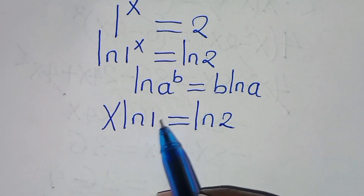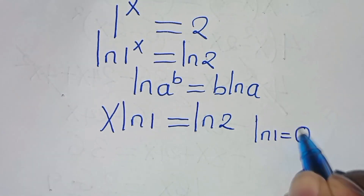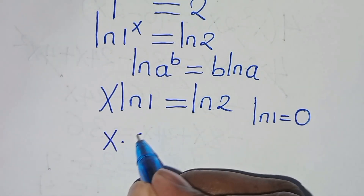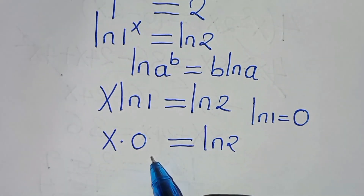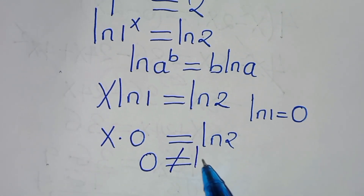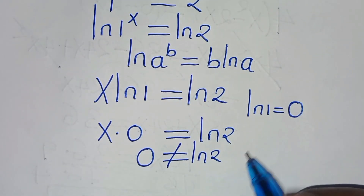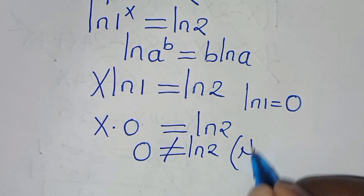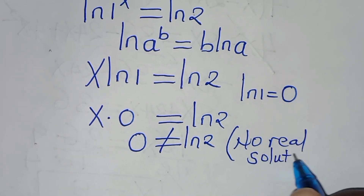You find that ln(1) is equal to 0. So we have x times 0, which is 0. And 0 is not equal to the natural log of 2. So from here, this implies that there is no real solution.